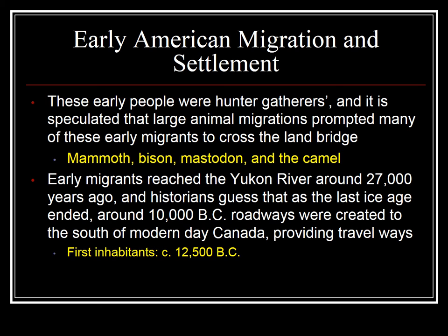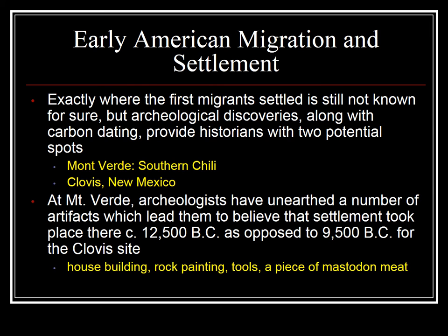History doesn't become history until someone writes it down. If it's not written down, we have no record of it, and that's where archaeology, anthropology, and the like are very helpful to historians. Exactly where the first migrants settled is not really known for sure; however, carbon dating has been beneficial in helping us understand where and when the first migrants settled. When we say settled, we mean they became less nomadic and more agricultural, establishing more permanent settlements.